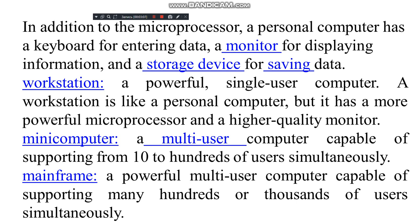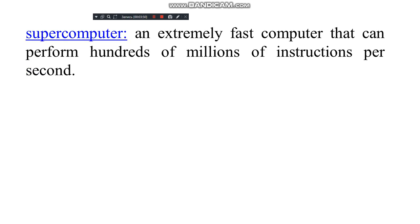In addition to the microprocessor, a personal computer has a keyboard for entering data, a monitor for displaying information, and a storage device for saving data. Workstation — a powerful single-user computer; it is like a personal computer but has a more powerful microprocessor and higher-quality monitor. Mini computer — a multi-user computer capable of supporting 10 to 100 users simultaneously. Mainframe — a powerful multi-user computer capable of supporting many hundreds or thousands of users simultaneously. Supercomputer — an extremely fast computer that can perform hundreds of millions of instructions per second.